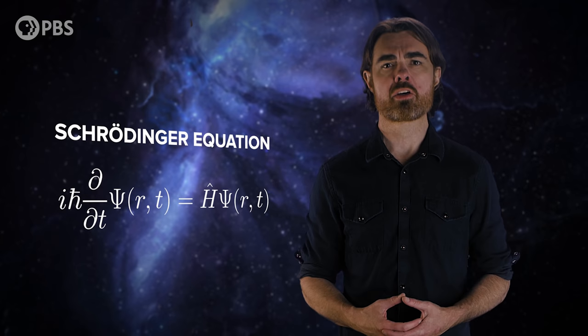The actual mechanics of quantum mechanics is all about determining the shape and evolution of the wave function. To calculate this we use the Schrödinger equation, which tells us how the amplitude of the wave function changes over time and space.